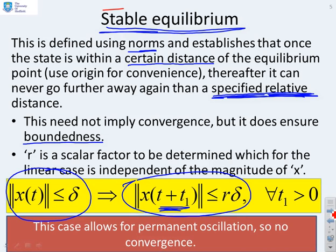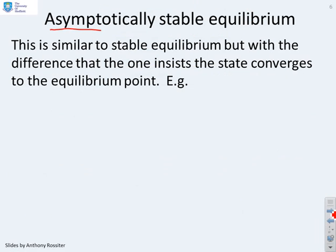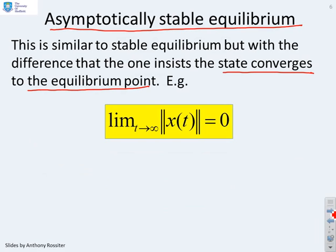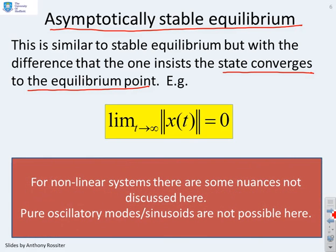The interesting thing about the definition of a stable equilibrium is that it allows for permanent oscillation. We haven't said that x of t converges to a specific point; we've said it remains within a given distance of a given point, and therefore permanent oscillation is permitted. What about asymptotically stable equilibrium? This means the state actually converges to the equilibrium point. Taking the origin for convenience, we're saying the limit as t goes to infinity of the norm of x of t must be zero. Adding 'asymptotically' to the definition, we now insist on convergence. A key point is that an asymptotically stable equilibrium does not allow oscillatory modes.